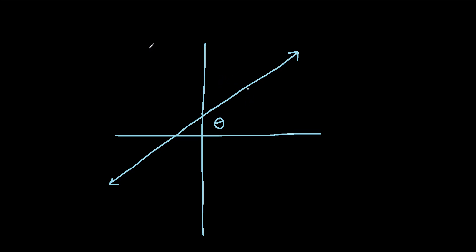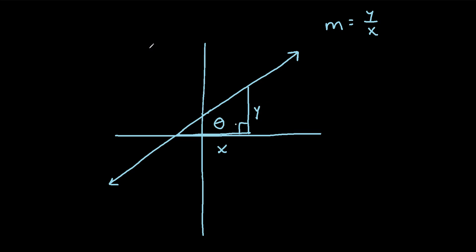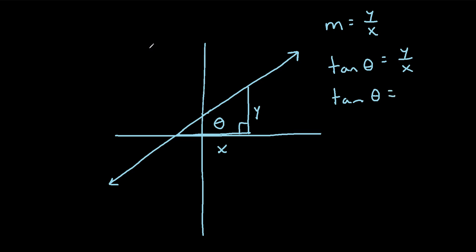Slope is calculated as rise over run. So if we label this rise as y over run as x, we would say the slope of this line, which we usually write as m, is equal to y divided by x. What we'll notice here is we've actually created a right triangle, where this angle is 90 degrees. When we have a right triangle, we can calculate the tangent of theta by using the opposite side divided by the adjacent side, or y over x. So the tangent of theta equals y over x. Notice we just said slope is also equal to y over x, so we can replace y over x with m. The tangent of theta is equal to m.